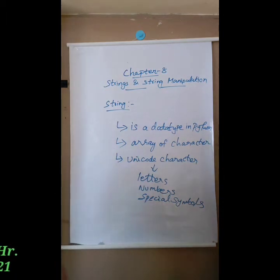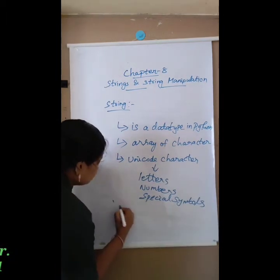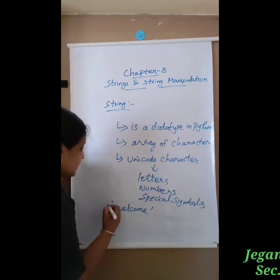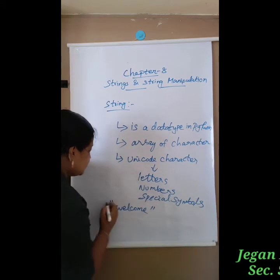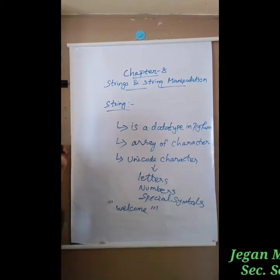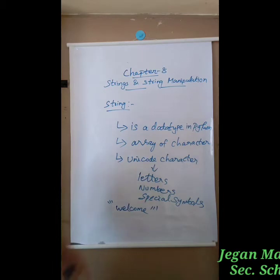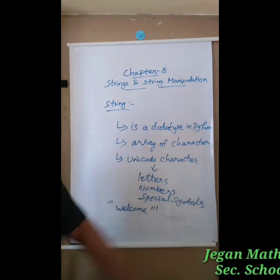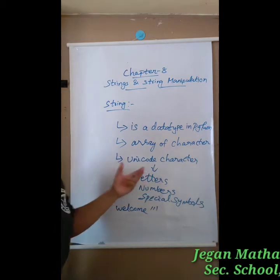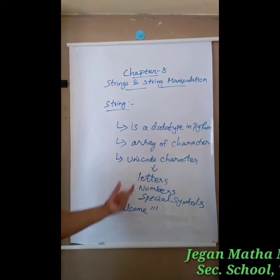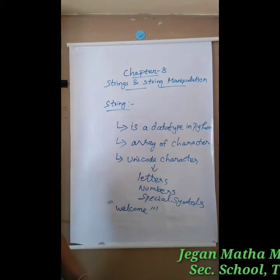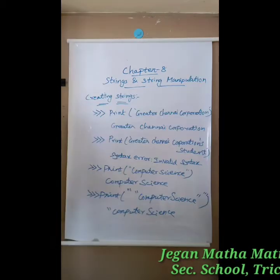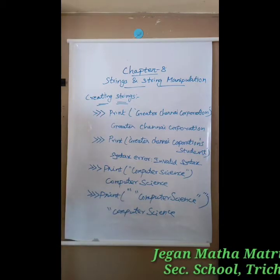For example, 'welcome' can be written within single quotes, double quotes, or triple quotes. To recap: string is a data type, it is used to handle an array of characters, and string is a sequence of unicode characters — that is, letters, numbers, and special symbols — enclosed within single quotes, double quotes, or triple quotes.